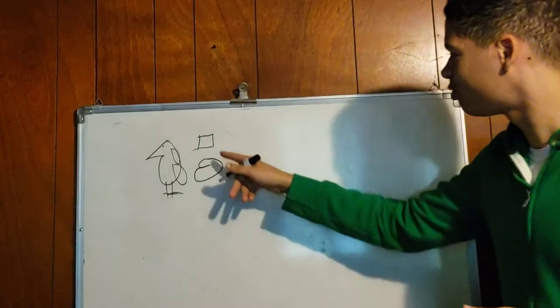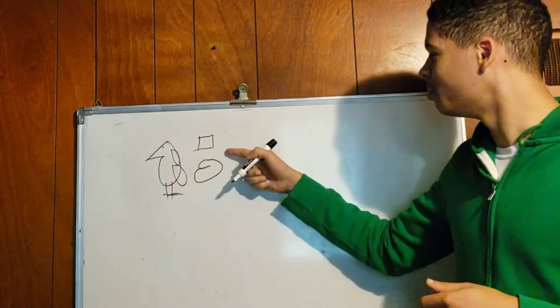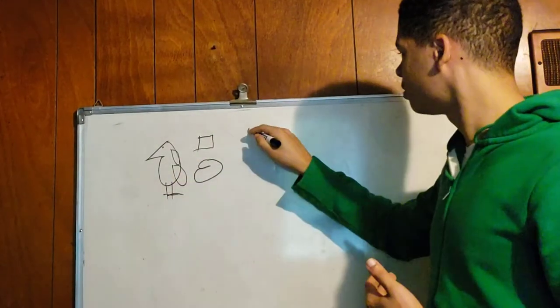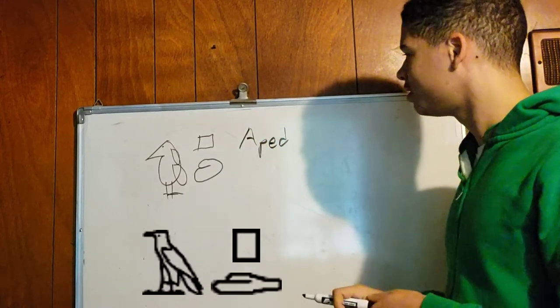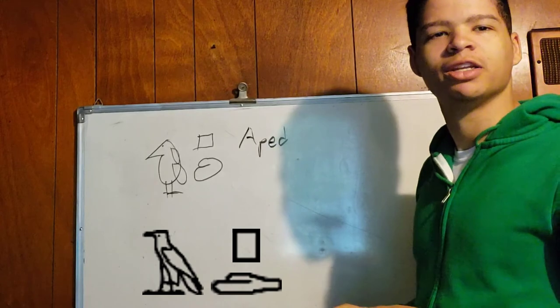There we go. So, we have a bird, a mat, and a hand. And that all comes out to be aped. Aped. The word for bird in Egyptian.